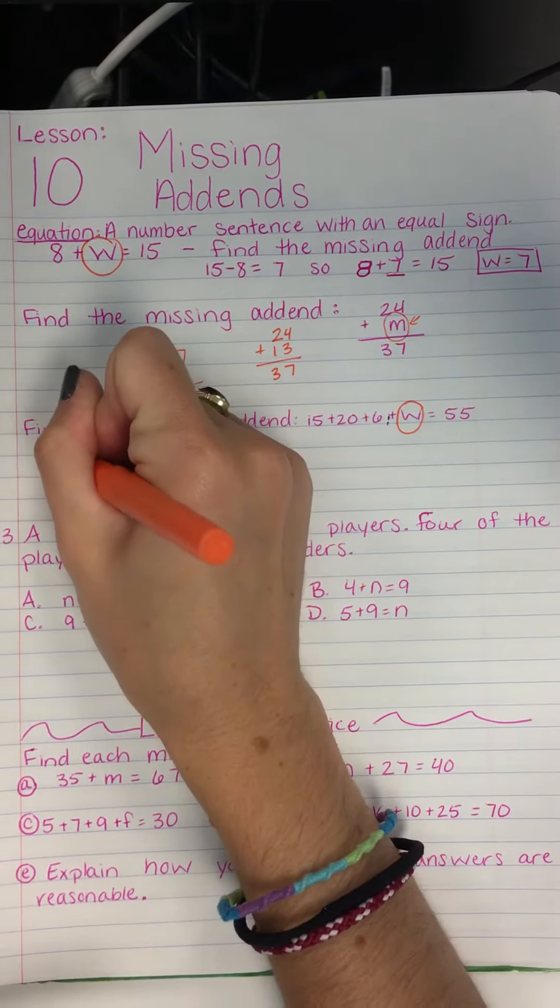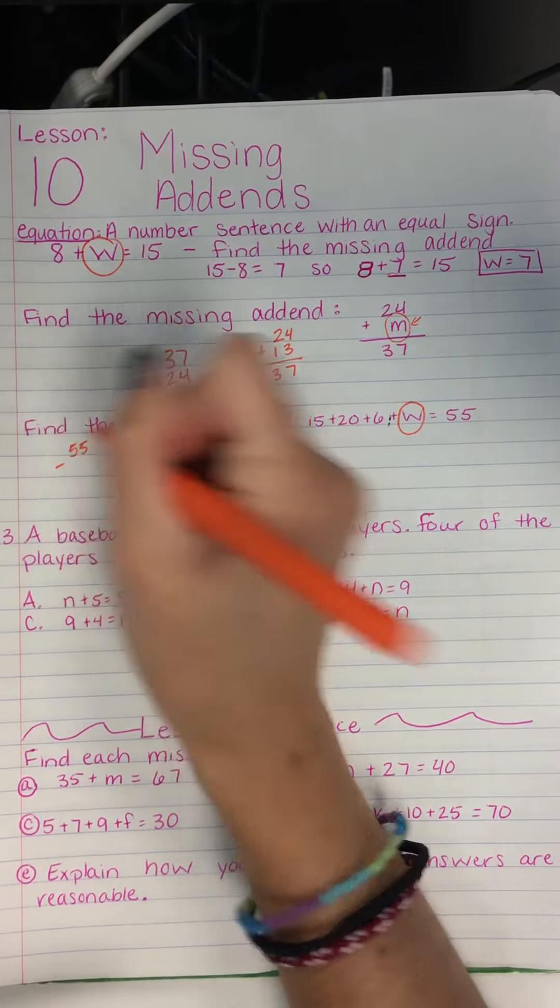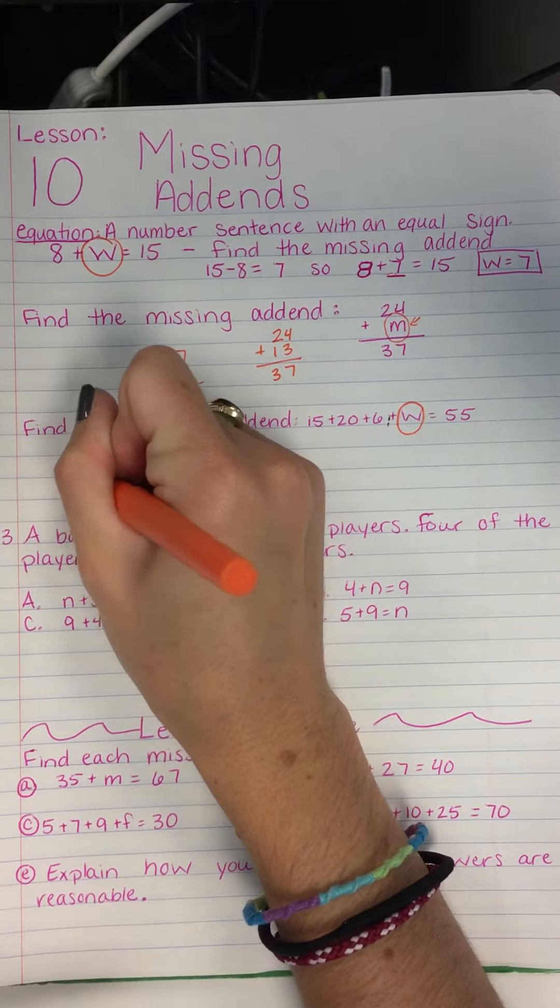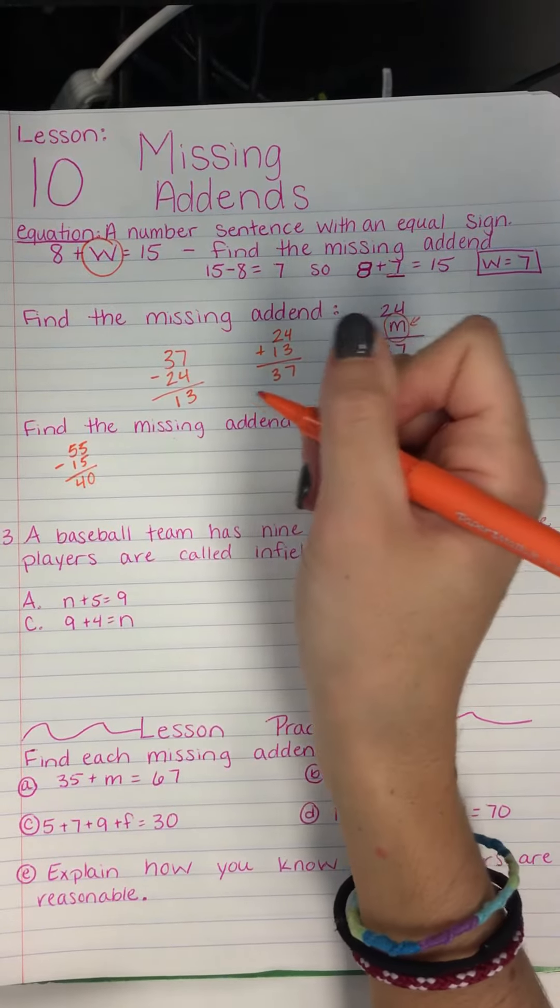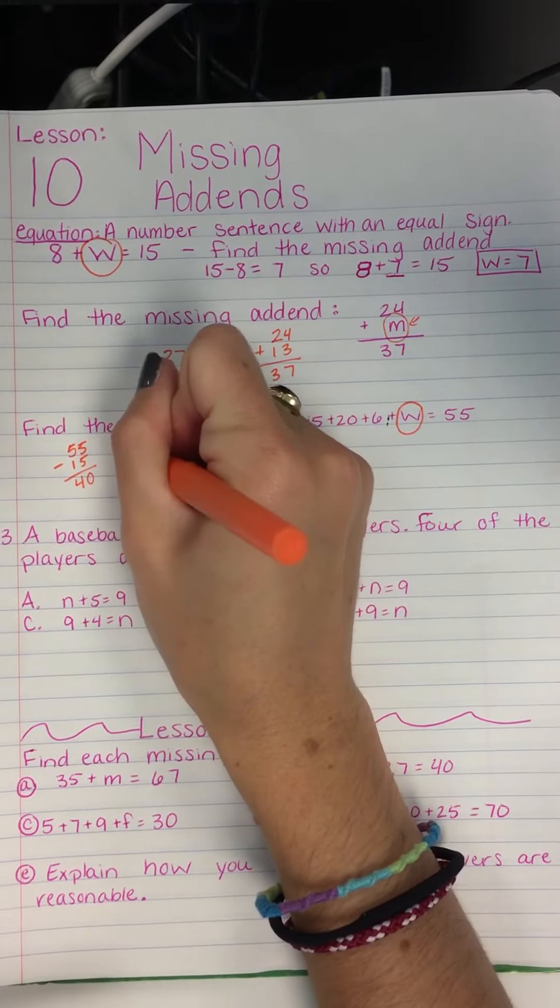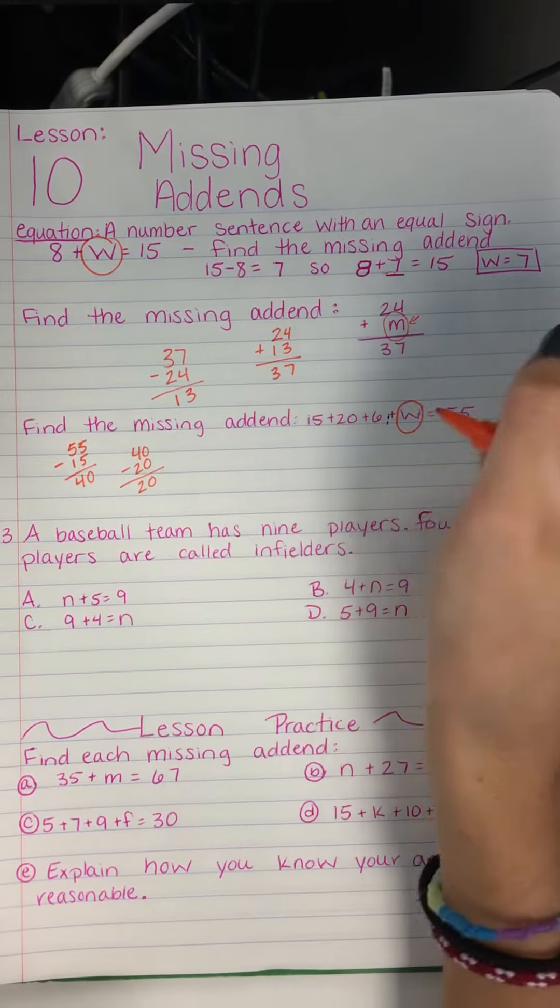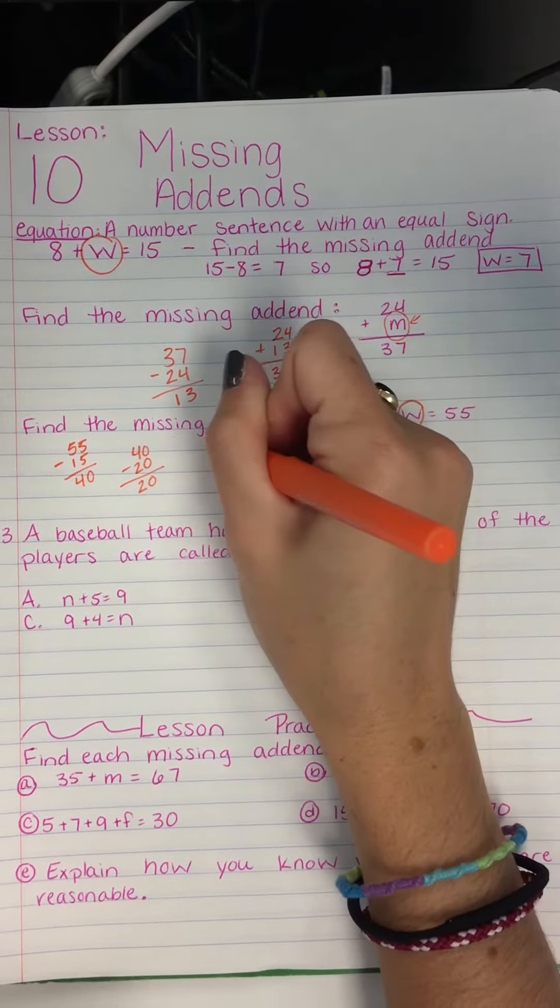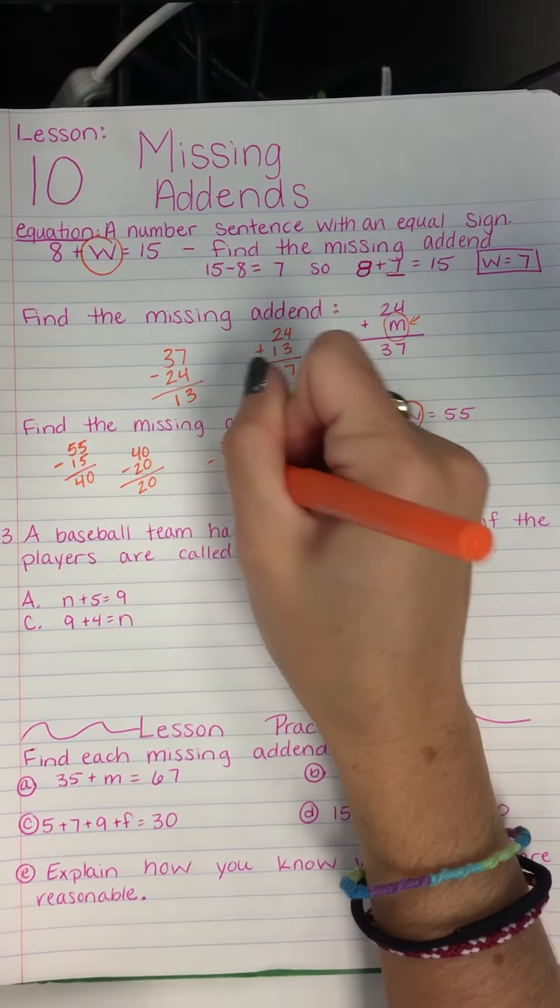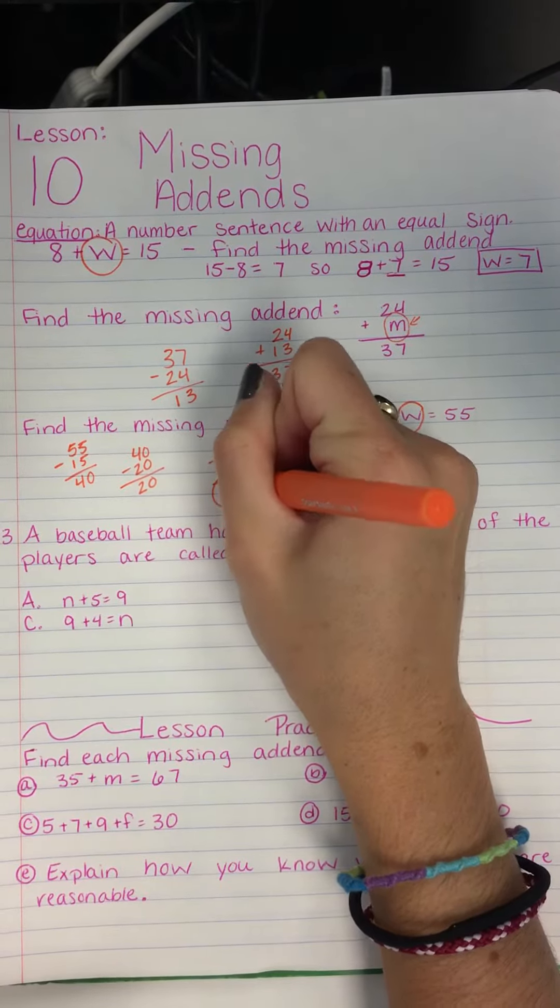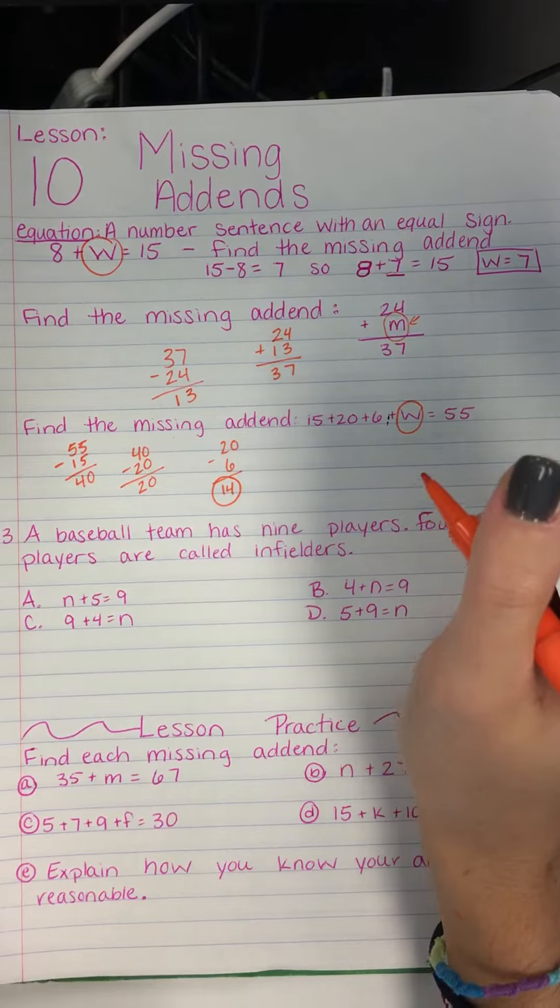Alright, so we're going to do 55 take away 15. That will give us 40. And then we're going to do 40 take away 20. That gives us 20. Then I do 20 take away 6, and that gives us 14. So this is what I think my answer is. Now I'm going to double check it.